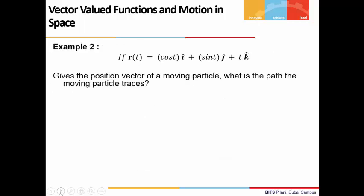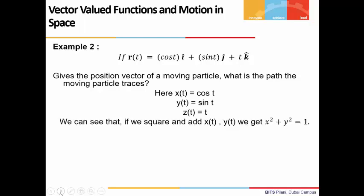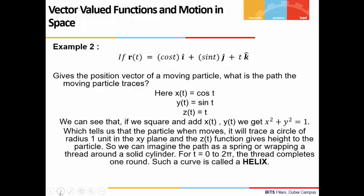Let's look at another example. Here, r(t) gives the position vector of a moving particle in space. If we want to know what path the moving particle traces, we will first find x(t), y(t), and z(t). We see x(t) = cos(t), y(t) = sin(t), z(t) = t. Now we have to again eliminate t. We start with x and y, and if we square and add, we get x² + y² = 1. That is, the particle is moving in a circular path, and the radius of this circle is 1.